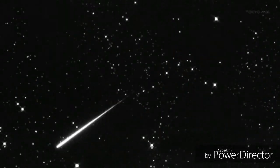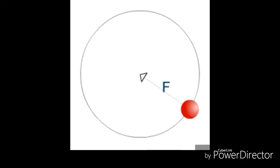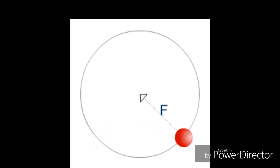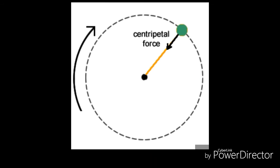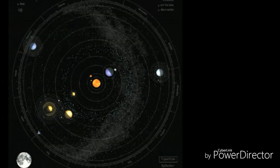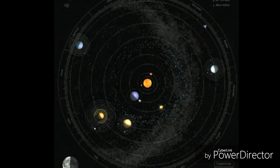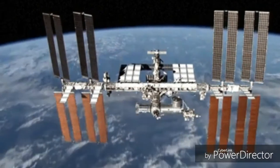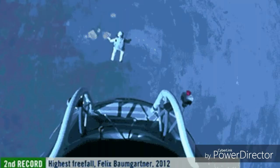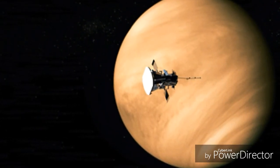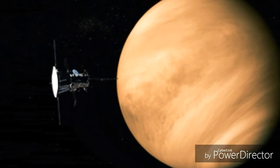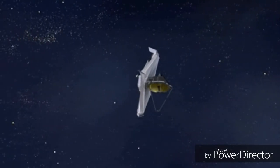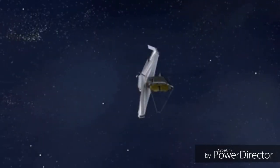As Newton's first law states, a moving object will continue to move in a straight line at the same speed unless a force acts on it. For an object to move in a circle, a force has to act on it all the time — this force is called centripetal force, and it acts towards the center of the circle. Gravity is the centripetal force that keeps planets moving around the sun and satellites moving around planets. When an object is in space, it is actually in perpetual freefall — nothing is holding it up against the force of gravity and it is constantly falling towards Earth with no resistance whatsoever. The force of gravity is unopposed.